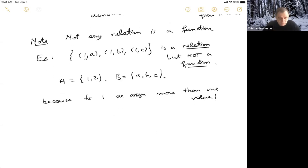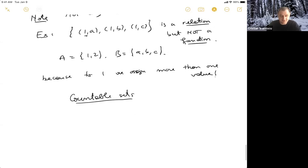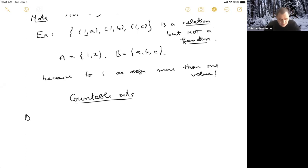So now, finally, we move on to something which is really going to play an important role when we talk about Lebesgue measure — which is countable sets. Everything so far was, hopefully, something you have seen before, but now we are focusing on countable sets. For instance, if you happen to think about doing completion of the rationals to get the real numbers, countable sets is an important concept. The rationals turn out to be countable, which I'm actually going to show you.